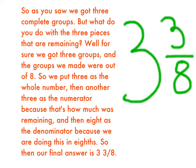Well, for sure we got 3 groups and the groups we made were out of 8. So we put 3 as the whole number, then another 3 as the numerator because that's how much was remaining, then 8 as the denominator because we're doing this in groups of 8. So our final answer is 3 and 3 eighths.